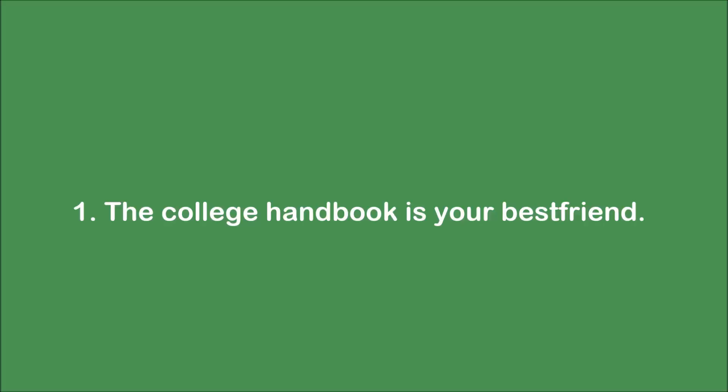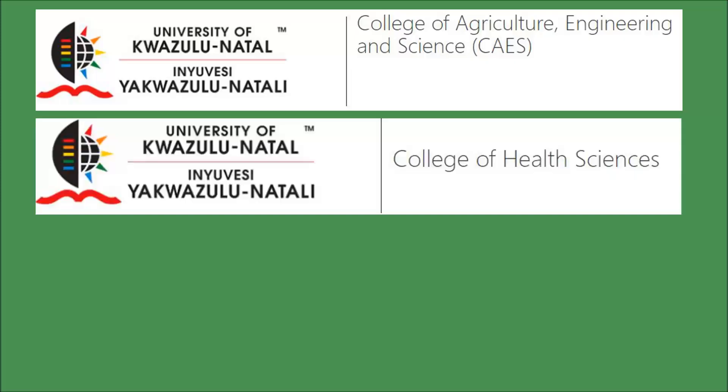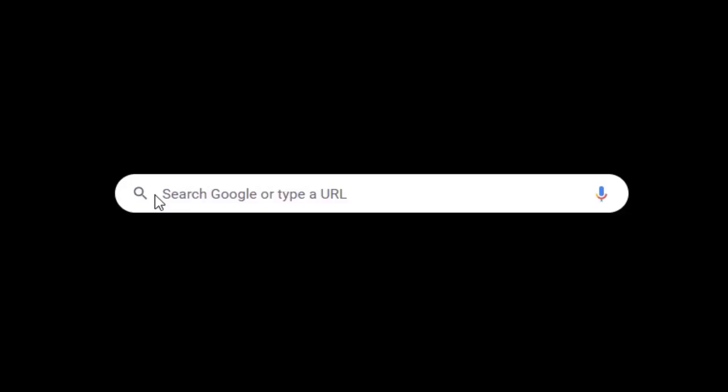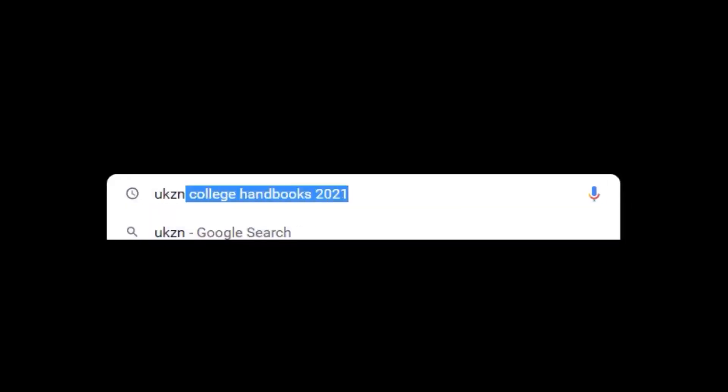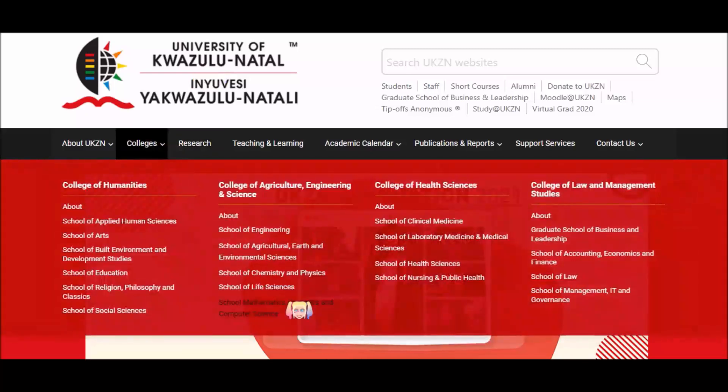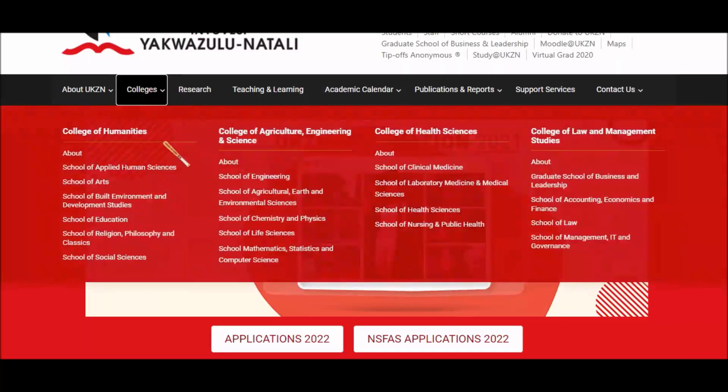Number one, the college handbook is your best friend. UKZN has four colleges and the college handbook is basically your number one guide for anything you need to know about your degree. These handbooks are free to download on the UKZN website. I have also linked them in the description below.